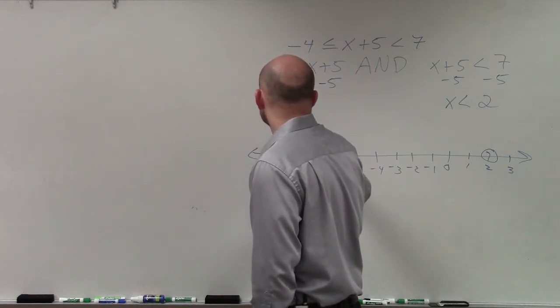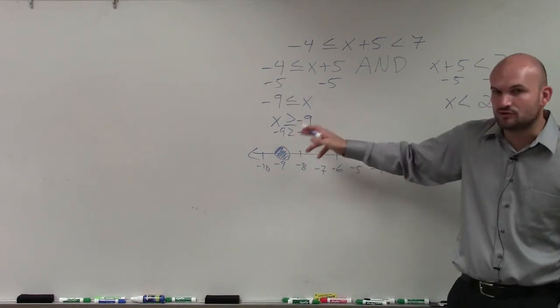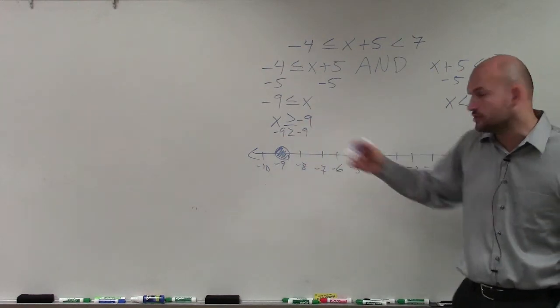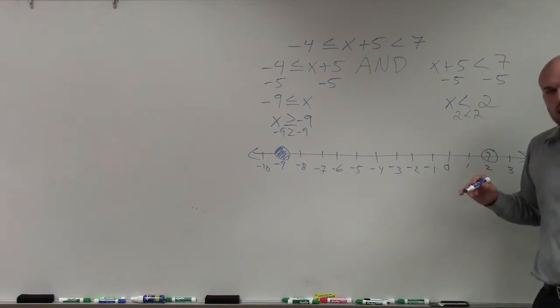So that means it's a part of the solution. And again, what do I mean by a part of the solution? If you plug in negative 9 in for x, negative 9 is greater than or equal to negative 9. That's true. This, if you plug in 2 in for x, is 2 less than 2. No, that's false. That's why we leave it open.